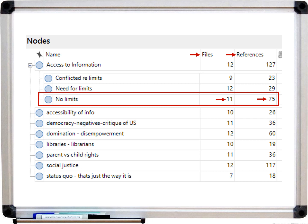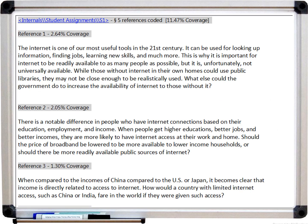Then if I want to see the 75 individual segments of text, I can just double-click on the node to open a brief view of those individual passages of text. This view shows me the individual passages of text divided out by the data source.